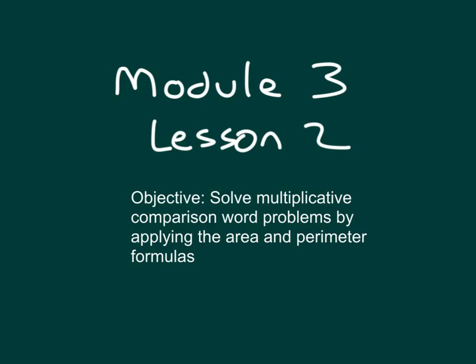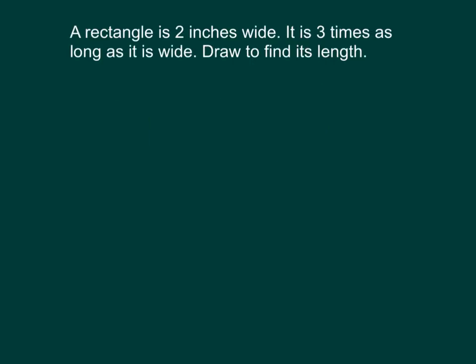The objective within this lesson is to solve multiplicative comparison word problems by applying the area and perimeter formulas. A rectangle is 2 inches wide. It is 3 times as long as it is wide. Draw to find its length.